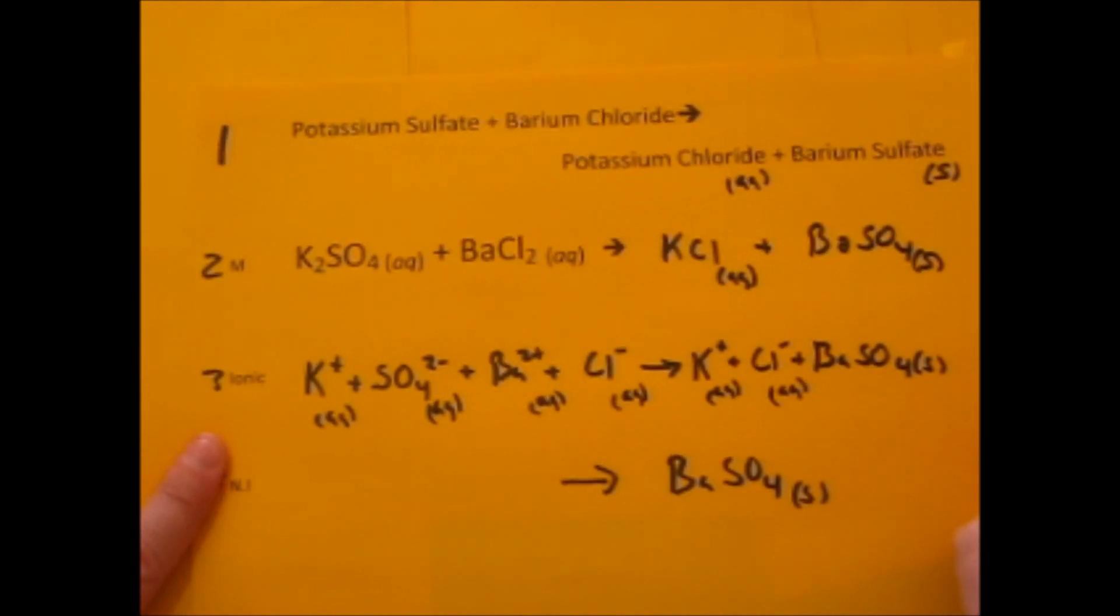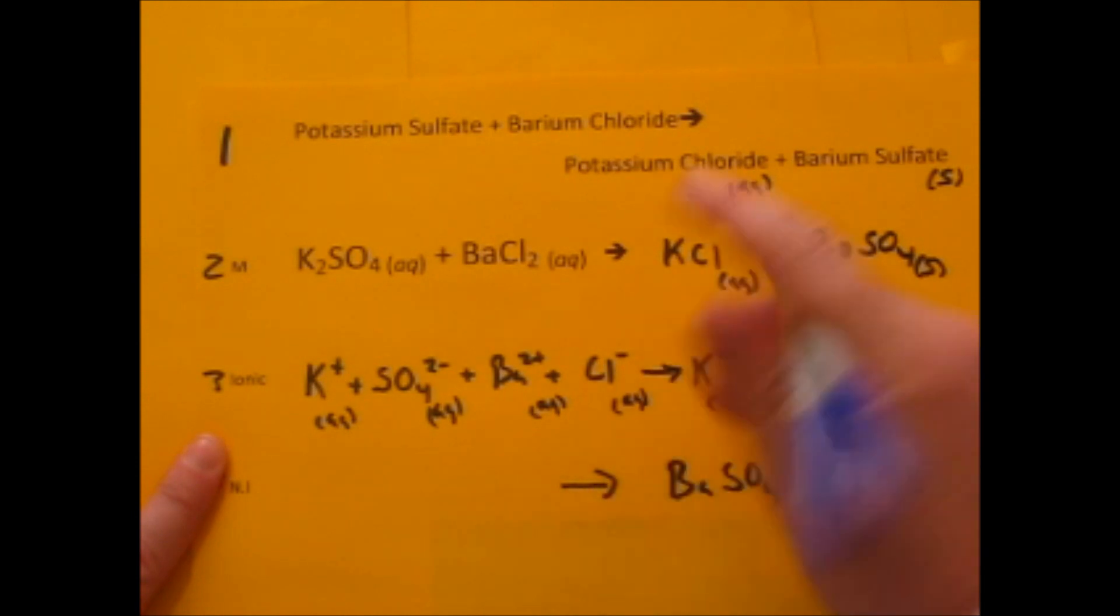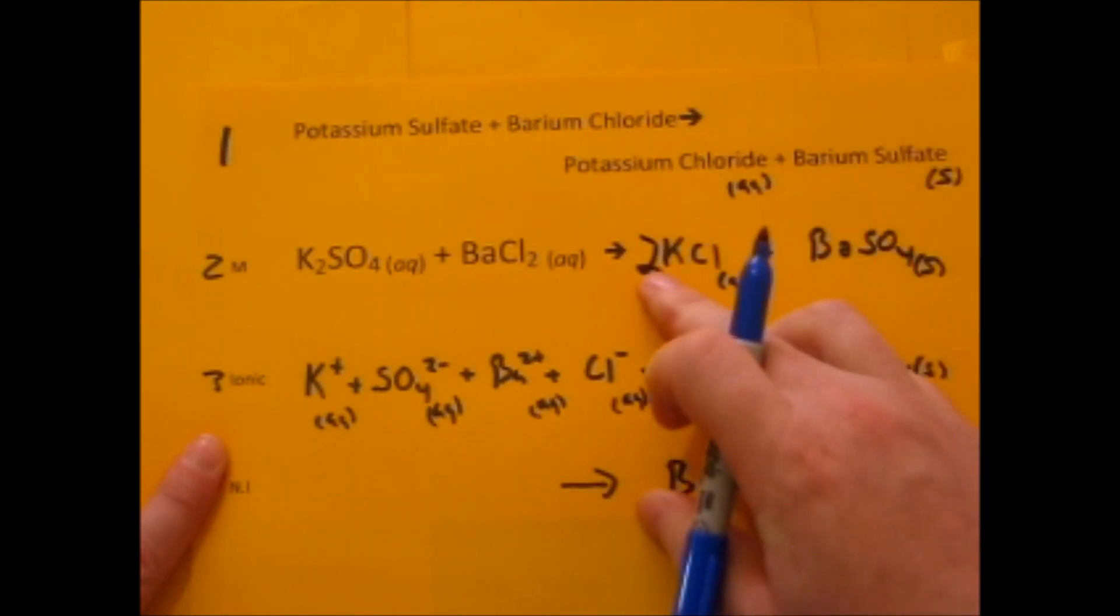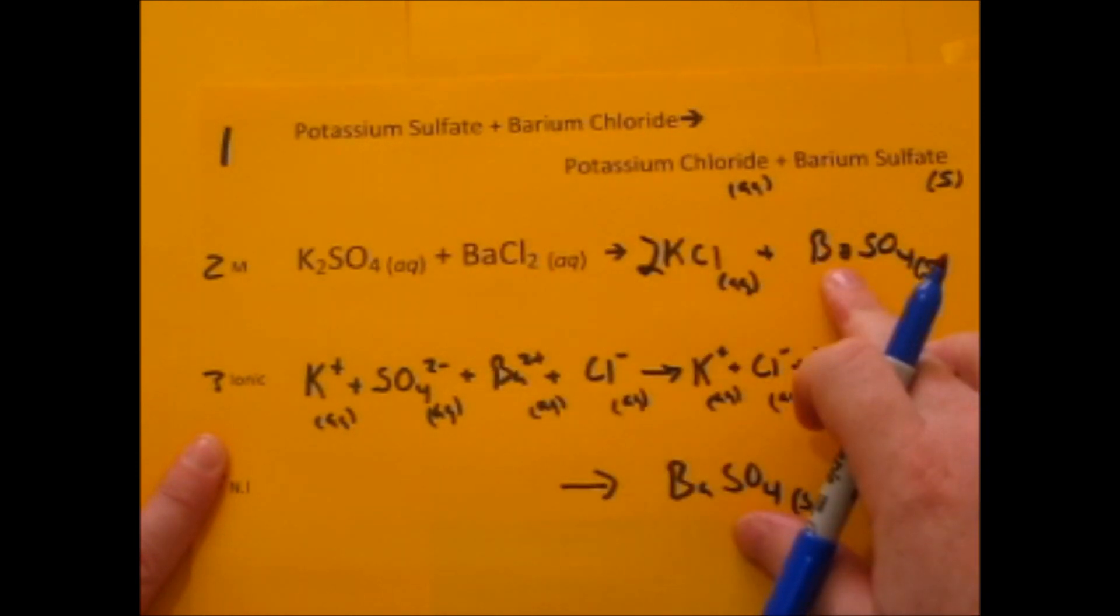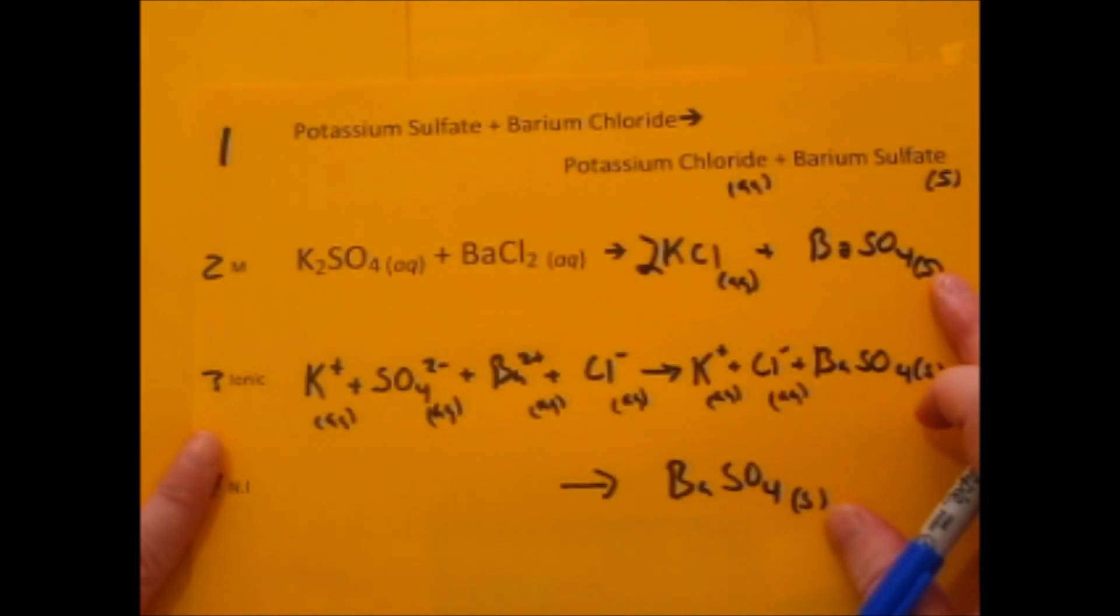So we're going to go back up to the molecular. Two potassiums, one potassium - so we put a two in front. Now we have two Cls, two Cls, that's fine. One barium, one barium. Sulfates - one sulfate, one sulfate. It's balanced.